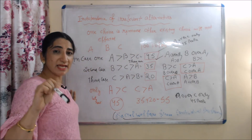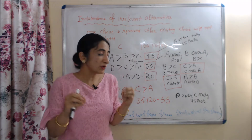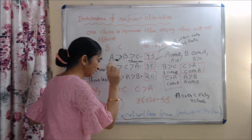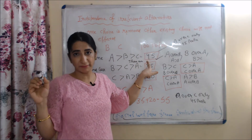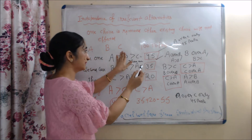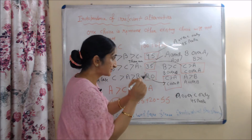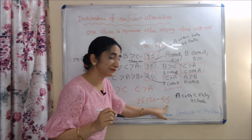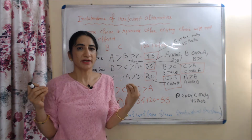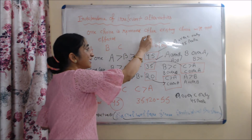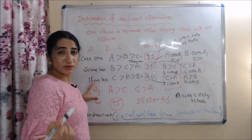According to the majority vote system, A is the winner with the highest 45 votes. Now suppose B is removed. Only A over C and C over A remain. A over C has only 45 people, but C over A has 35 plus 20, which is 55 people. So now A has only 45 votes but C has 55 votes — C is the winner. When we removed B, A and C were affected, which means this condition is violated.